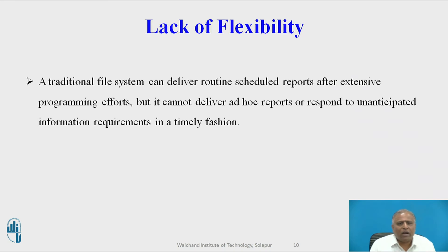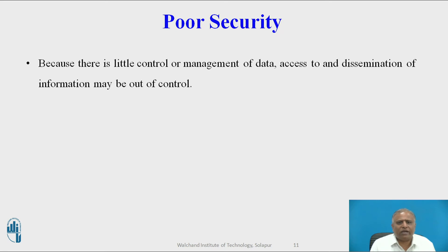Next is lack of flexibility. A traditional file system can deliver routine scheduled reports after extensive programming efforts, but it cannot deliver ad hoc reports or respond to unanticipated information requirements in a timely fashion. The information required by ad hoc reports may be in the system but can be too expensive to retrieve. Next is poor security. Because there is little control or management of data access, the dissemination of information is out of control, and management may have no way of knowing who is accessing or making changes to the organization's data.